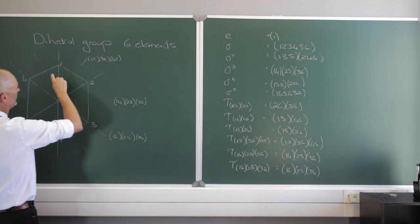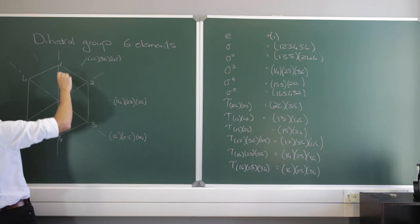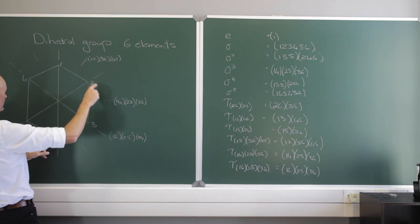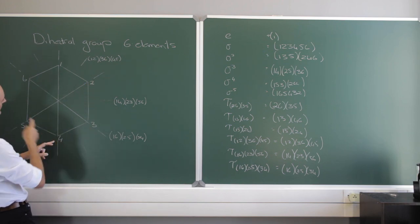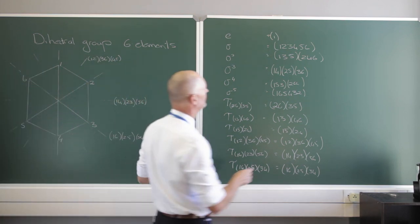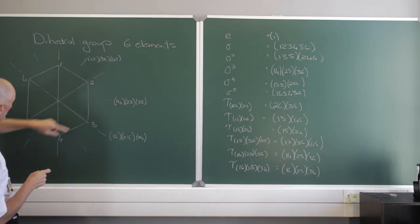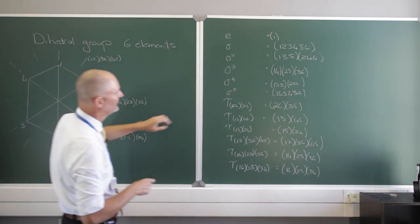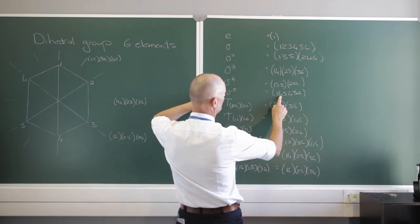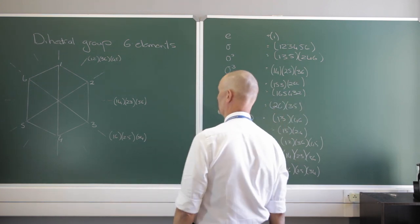Now we can do it three times — that's 180 degrees, or pi radians. 1 goes to 4, 2 goes to 5, and 3 goes to 6. We can also rotate 1 all the way to 5, and rotate 1 all the way to 6. And if we do all the way to 6: 1 goes to 6, 6 to 5, 5 to 4, 4 to 3, 3 to 2, and 2 back to 1.